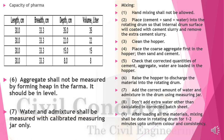Hand mixing shall not be allowed. First, coat the internal drum surface with cement slurry, then remove extra slurry and clean the hopper. Place coarse aggregate first in the hopper, then sand and cement. Check correct quantities are loaded. Raise the hopper to discharge materials into the rotating drum. Add correct amount of water and admixture using a measuring jar. Do not add extra water beyond the corrected batch sheet. Mix by rotating the drum for one to two minutes until uniform color and consistency is achieved.